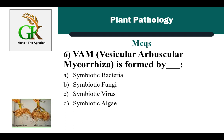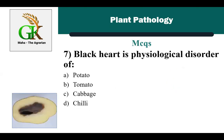VAM is a symbiotic association between roots of higher plants and some fungi, so the correct answer is B: symbiotic fungi.